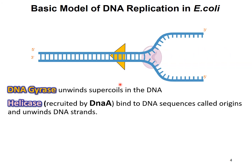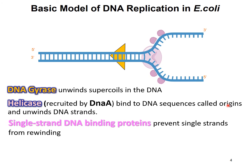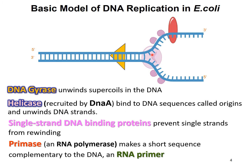Then you have the helicase enzyme that unwinds the double helix at a specific DNA sequence known as the origin. And then you also have the single strand binding proteins that prevent the single strand DNA from rewinding back into a duplex. You also have primase, which is also known as an RNA polymerase, that will synthesize a short sequence of RNA primer.